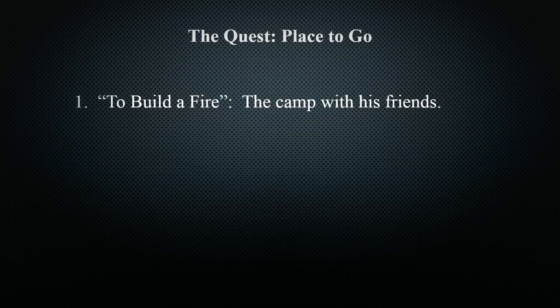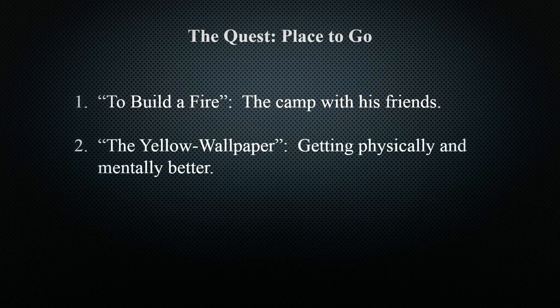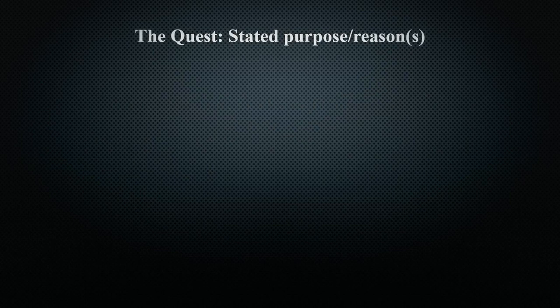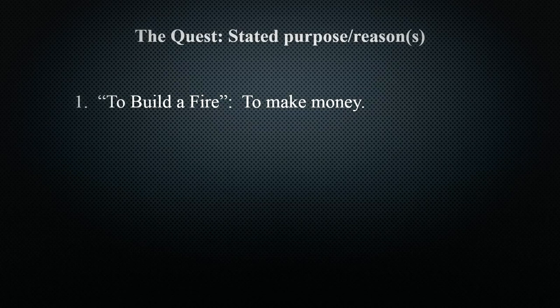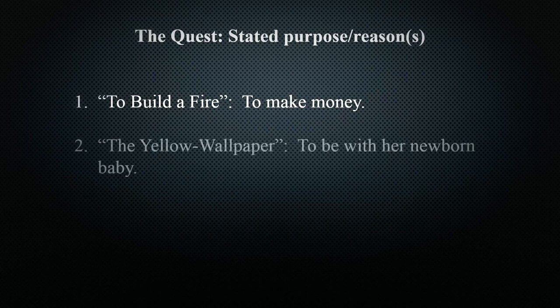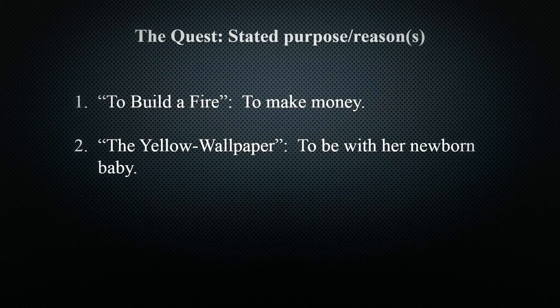Looking at the places they're going: in To Build a Fire, the character is going to camp to meet his friends. In The Yellow Wallpaper, the woman is attempting to get physically and mentally better — to recover from postpartum depression. The stated purposes: in To Build a Fire, the character is going to camp to meet his friends and also to make money — to profit from timber, if I remember correctly. In The Yellow Wallpaper, the protagonist wants to be with her newborn baby, to see her children and move about freely.